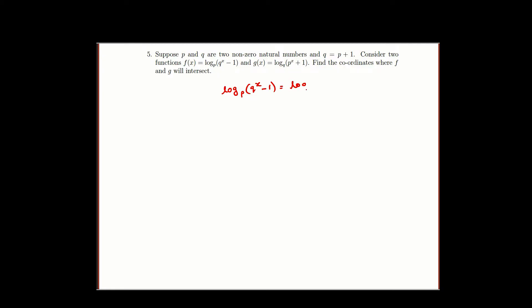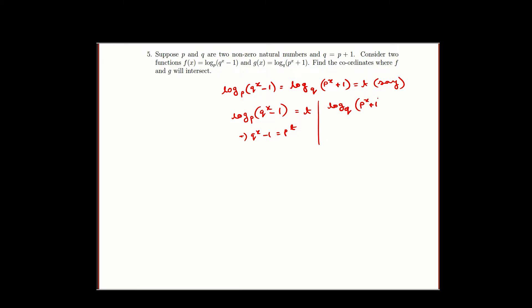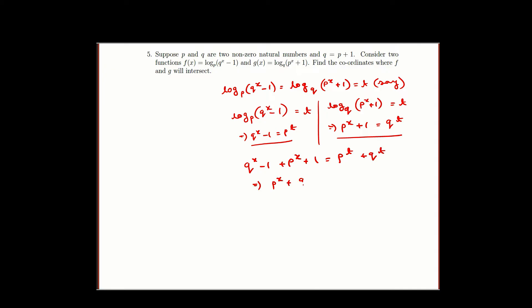The equation will be like this. Let us take it as t which we are going to solve. For the first term, if log base p of q^(x−1) is t, then q^(x−1) equals p^t. Similarly, for the second term, if log base q of p^(x+1) is t, then p^(x+1) equals q^t. If we add these two equations, we get p^(x+1) + q^(x−1) equal to p^t + q^t, which gives us p^x + q^x equal to p^t + q^t since the +1 and −1 cancel off.